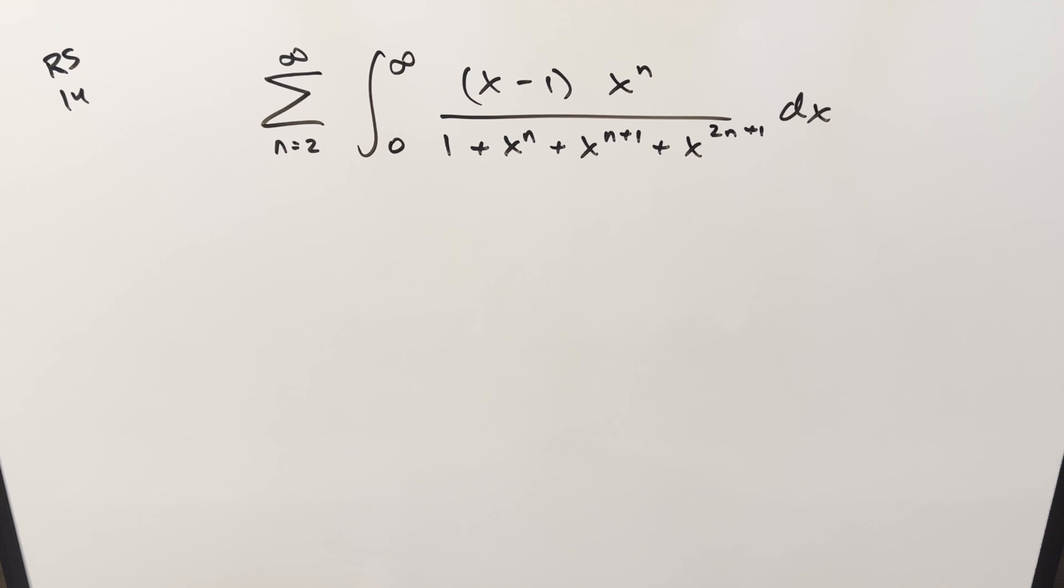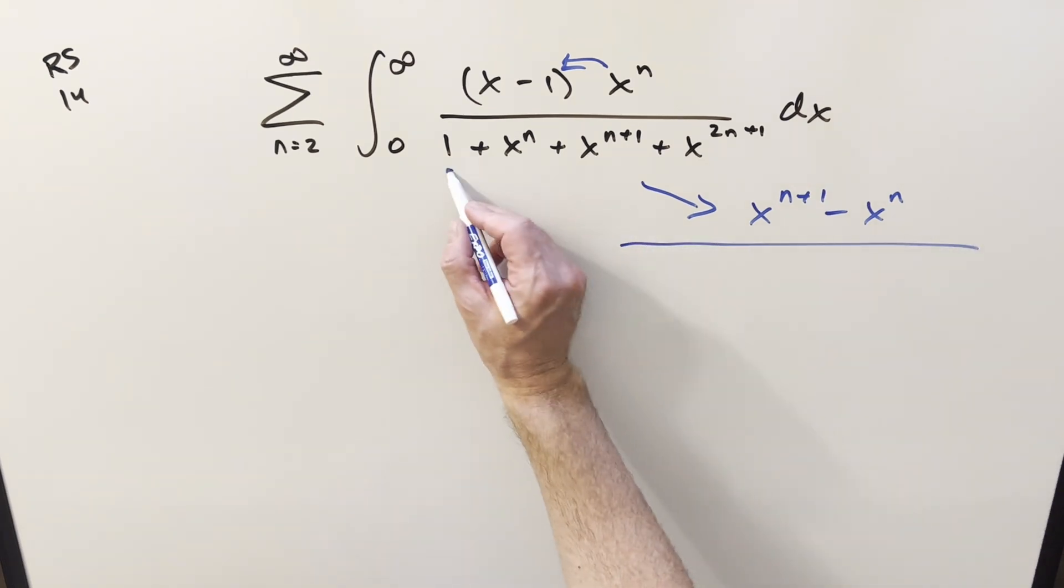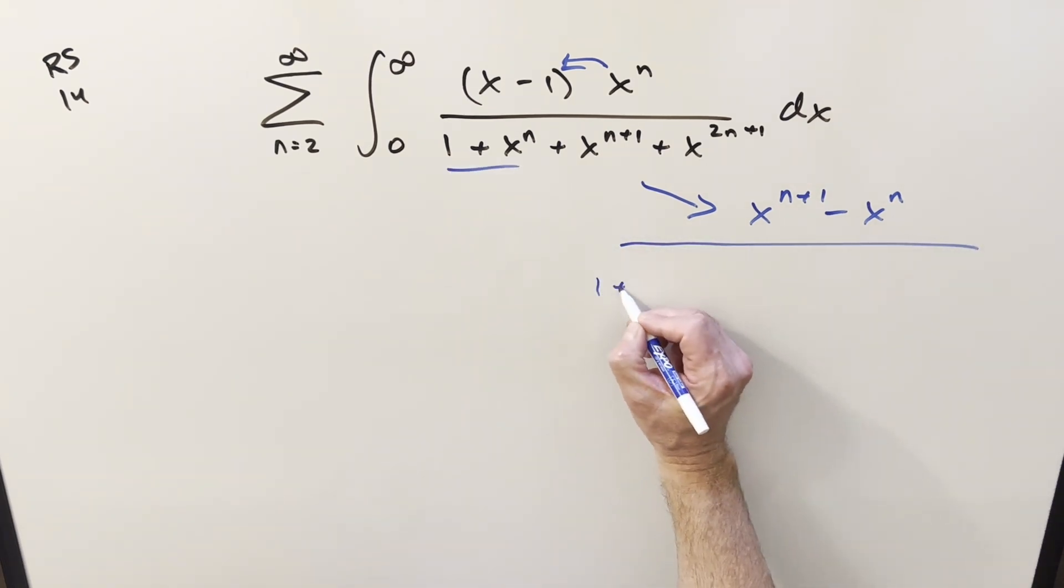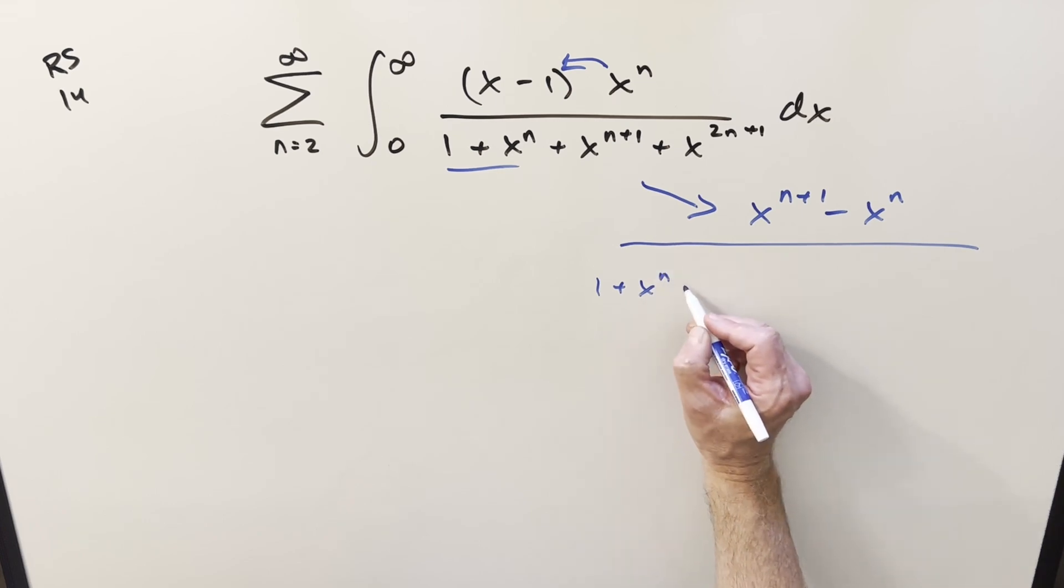I was really struggling with the first step on this one. I wasn't sure how I wanted to factor it. It's kind of confusing looking. Maybe the n's don't help. Let's just deal with the factoring before we do anything. If I multiply out the numerator, what's going to happen? Then we get x to the n plus 1 minus x to the n. In the denominator, let's just leave this first part. So we have 1 plus x to the n here.